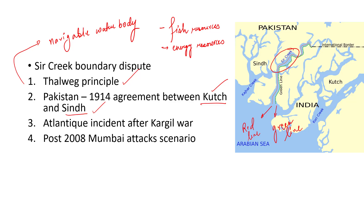This area has seen multiple unfortunate incidents even before the recent shooting of the fishermen. There was the Atlantic incident — just one month after the Kargil war, Indian forces shot down a Pakistani plane in this area after it entered the Indian side, killing all 16 Pakistani soldiers on board including the pilot. Since the 2008 Mumbai terror attacks, the Indian forces have been extremely vigilant over this water body because the terrorists who attacked Mumbai came through a boat. Multiple instances of empty boats have also been found in this area. That is why the BSF, the Indian Coast Guard and even the Indian Navy are involved in patrolling this area.